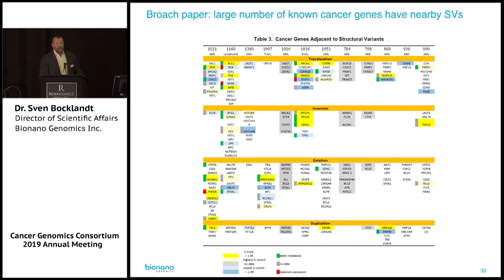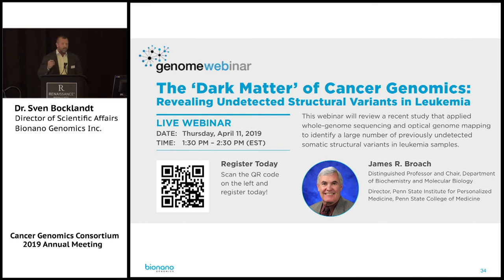They are also seeing a large number of structural variants near cancer-associated genes within a five-megabase-pair region — potentially new discoveries of genes and structural variants we don't yet understand. Jim Broach presented a webinar that is recorded on our website, and there's a transcript of this webinar in all of your conference bags.